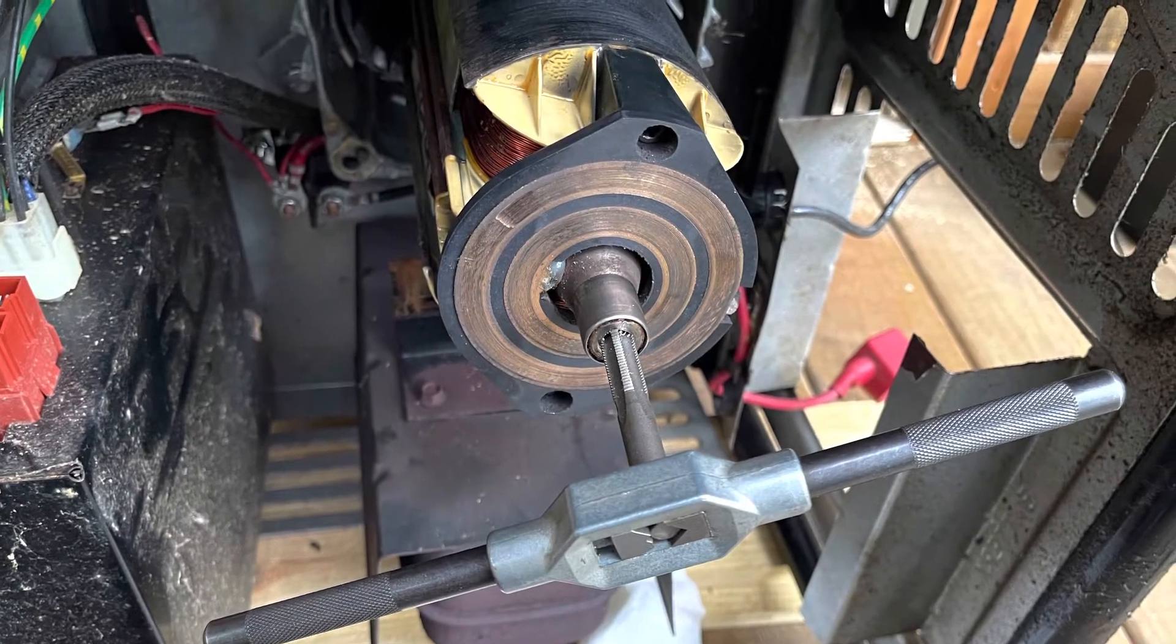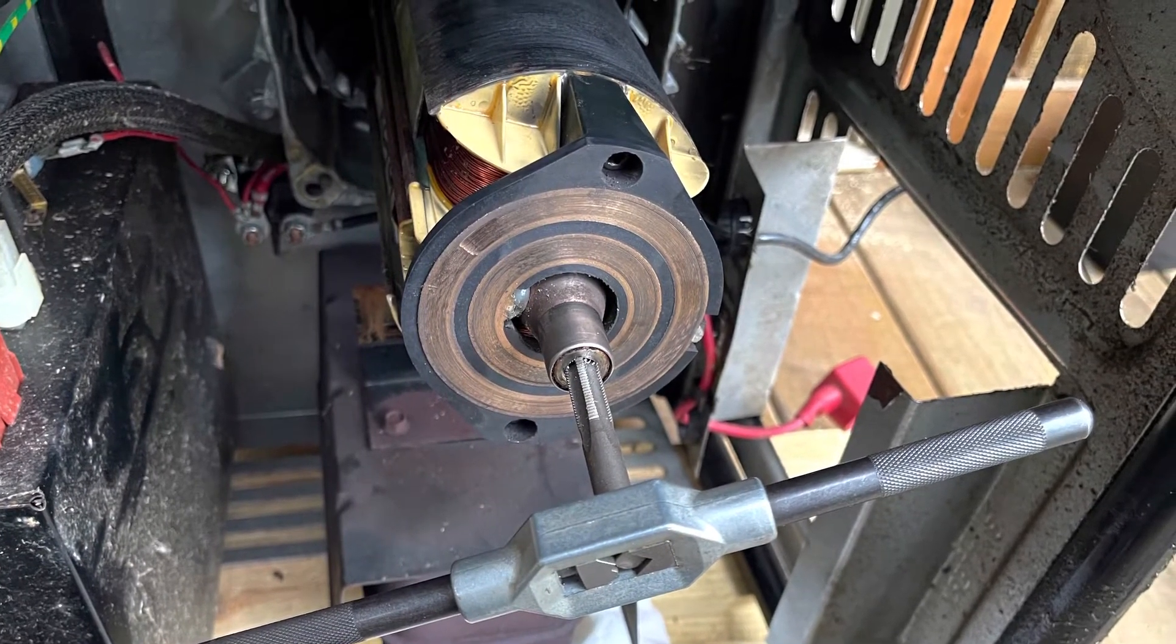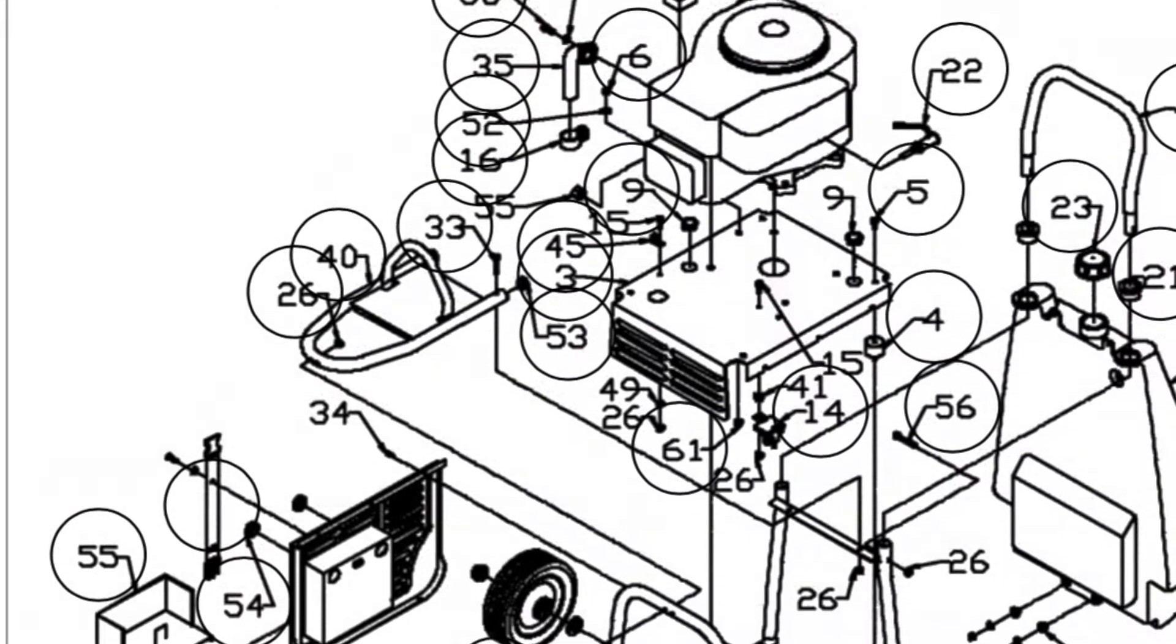After a little bit of research, there was a suggestion to thread the end of the armature shaft and then insert a smaller diameter bolt and use it as a press, and turn in your bolt and press off the armature.